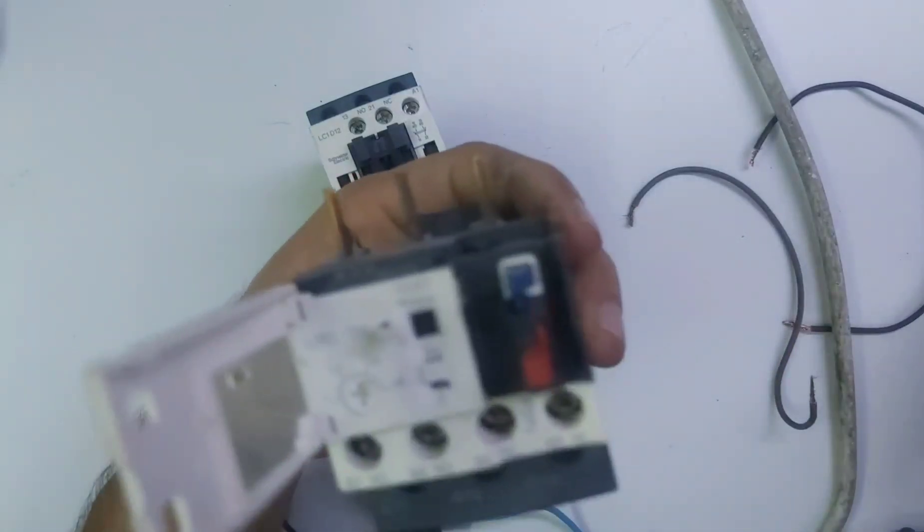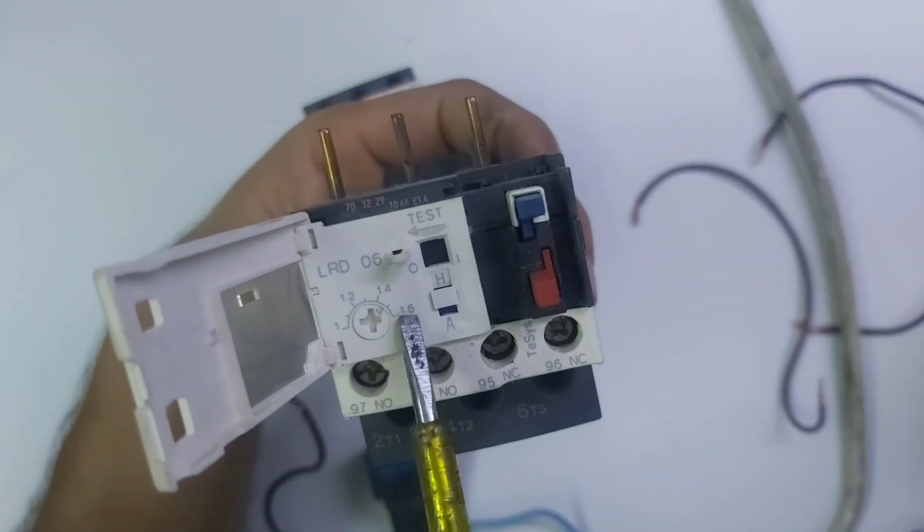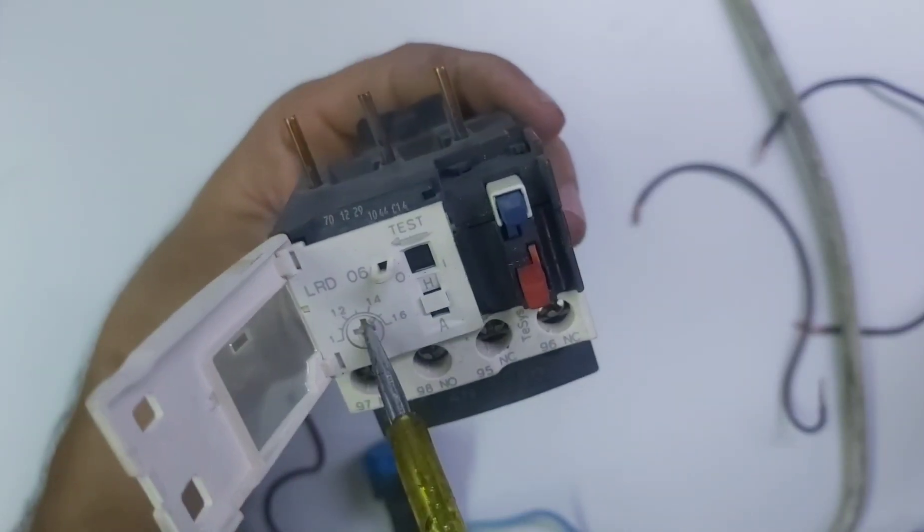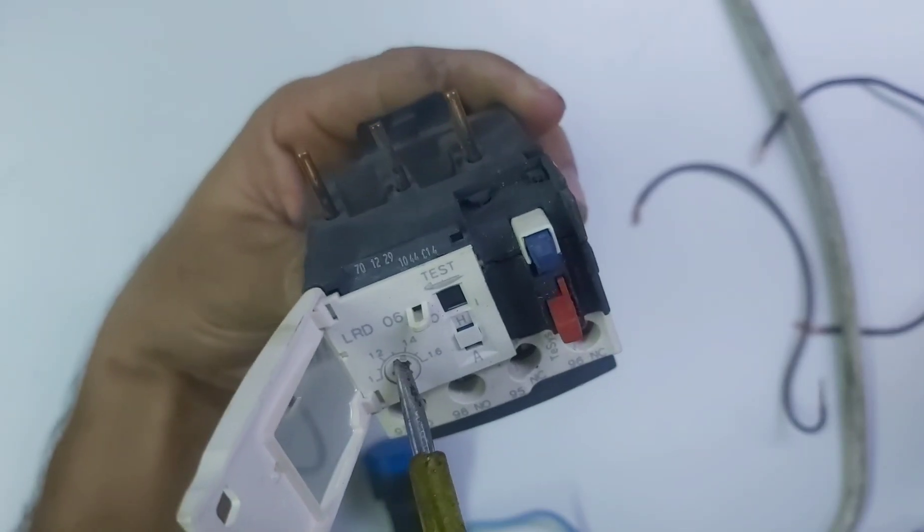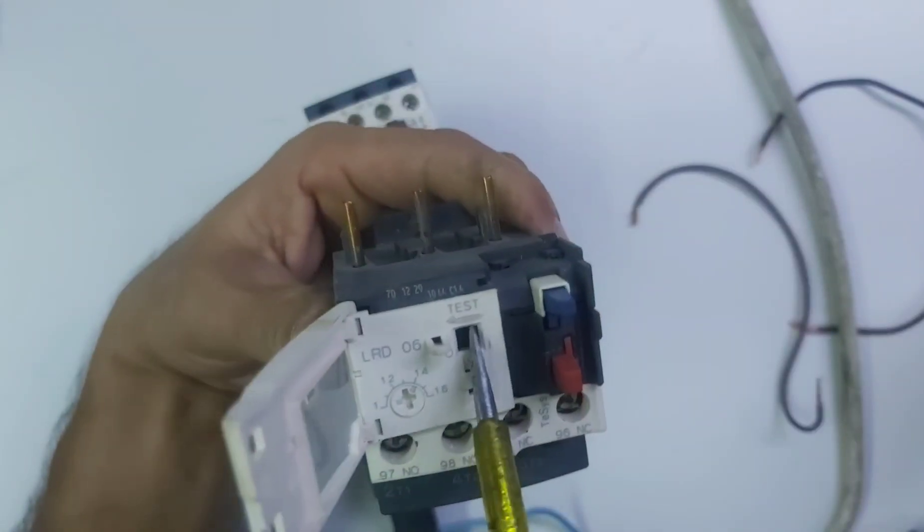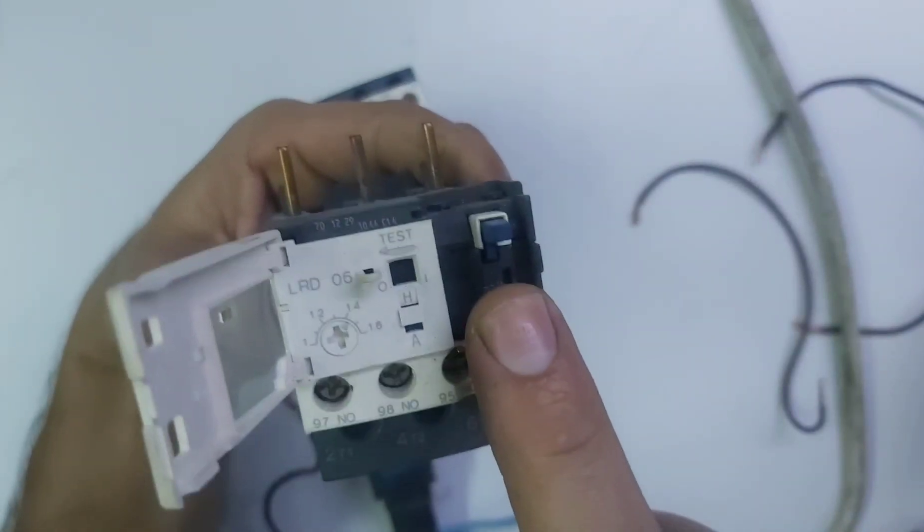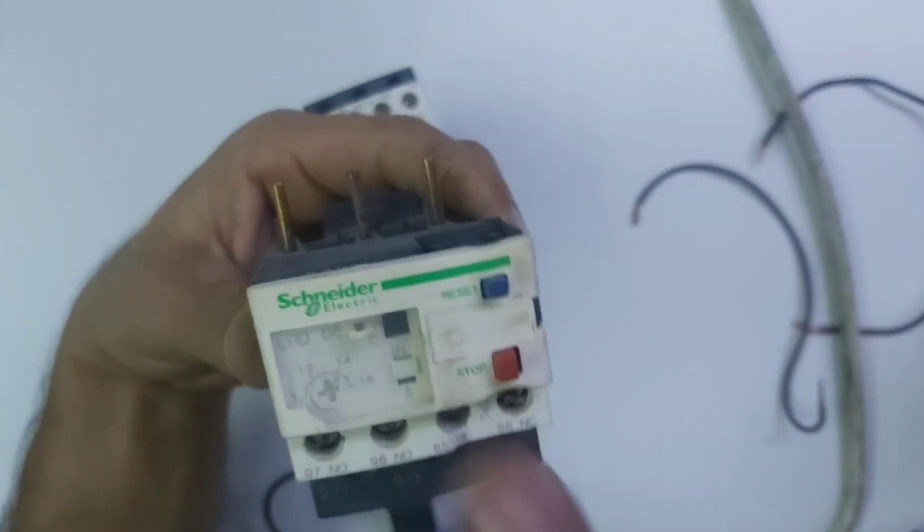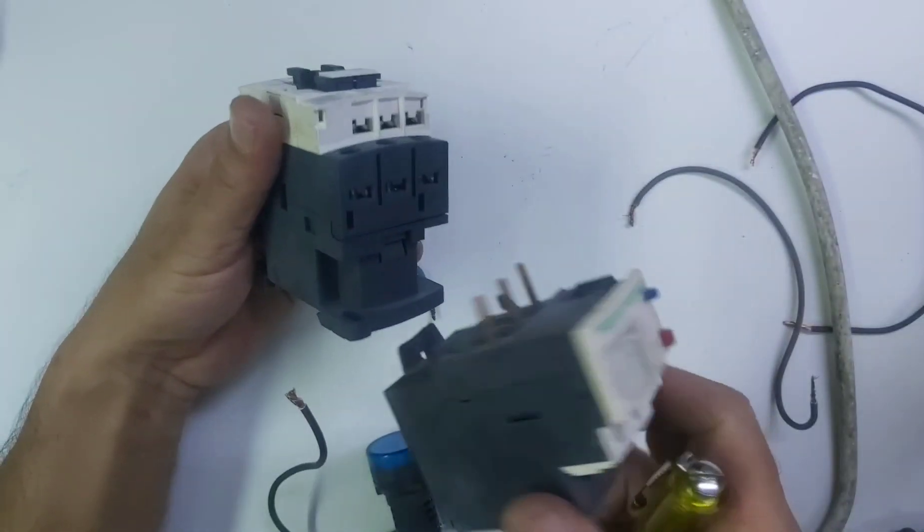See, first you need to see this is the ampere setting, you can adjust it. This is the mark which you can adjust with the screwdriver or tester, you can move like this. This is adjusted. And this is test button, I will show you when I connect the cable. And this is stop switch, this is reset. So let's do the connection, first you need to connect with contactor.